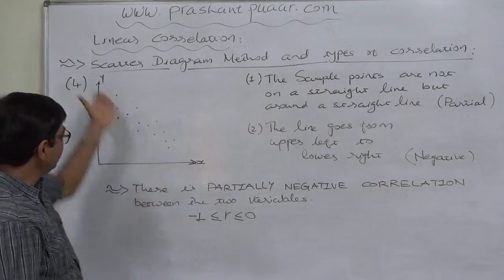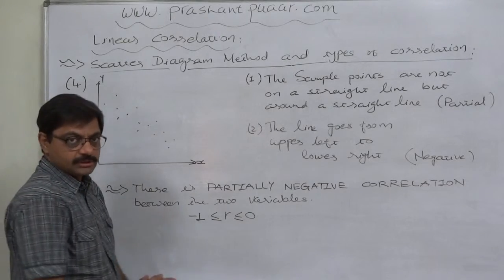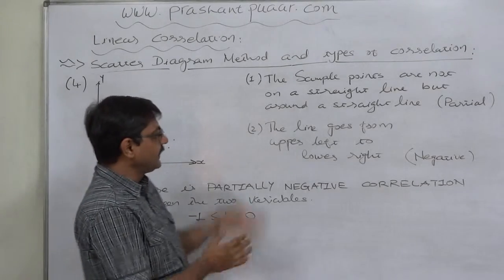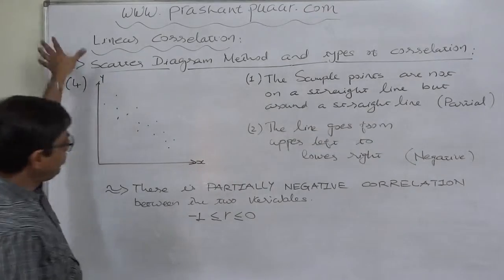That means we can imagine a straight line going through the sample points, and if we imagine such a straight line, then the line goes from upper left to lower right.